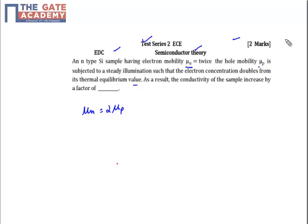So the question says that because the mobility of the electron is doubled compared to the hole, and because of the thermal illumination, the electron concentration is found to double. So find the effect on the conductivity.